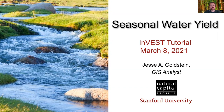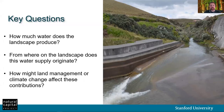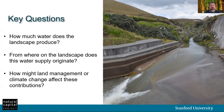I will also provide a walkthrough using actual inputs and outputs from the case study. Some questions that the seasonal water yield model, or SWY, can help to answer are: how much water does the landscape produce? From where on the landscape does this water supply originate? And how might land management or climate change affect these contributions? To answer this last question, multiple runs of SWY would need to be performed so that the results of different iterations could be compared to one another.